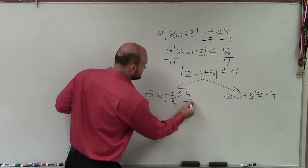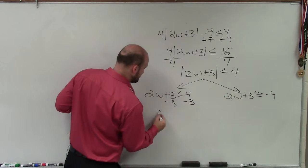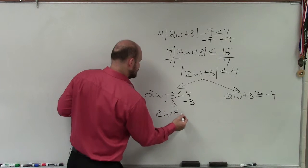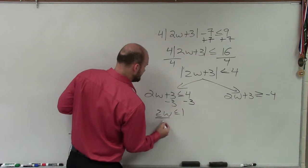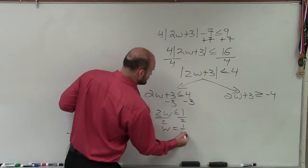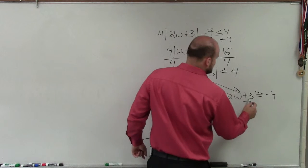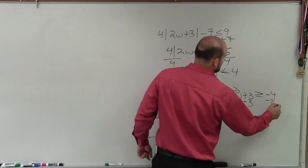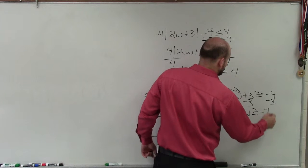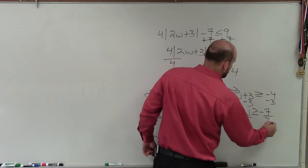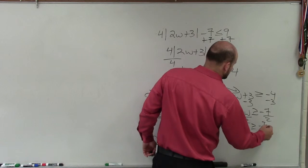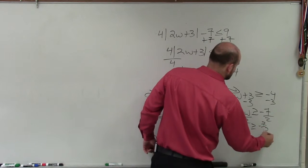So now I solve each one of these separately. For the first case: 2w is less than or equal to 1, divide by 2, so w is less than or equal to 1/2. For the second case, I subtract 3: 2w is greater than or equal to negative 7, divide by 2, so w is greater than or equal to negative 7/2.